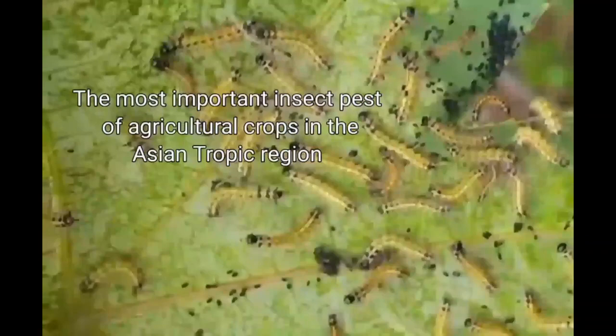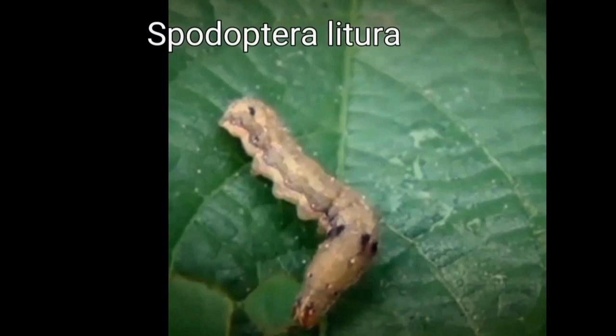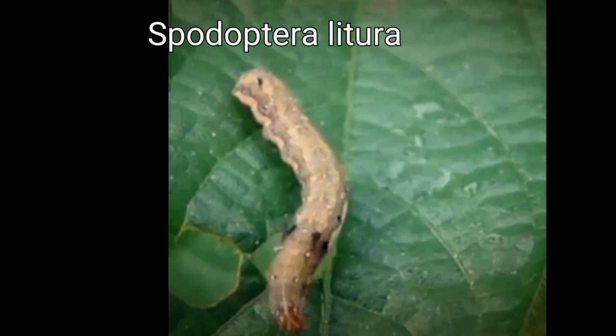Hello everyone. In this video session we're going to discuss one of the most important insect pests of agricultural crops in the Asian tropic region. The name of the pest is Spodoptera litura, also known as taro caterpillar. The common names of Spodoptera are tobacco cutworm or cotton leafworm.